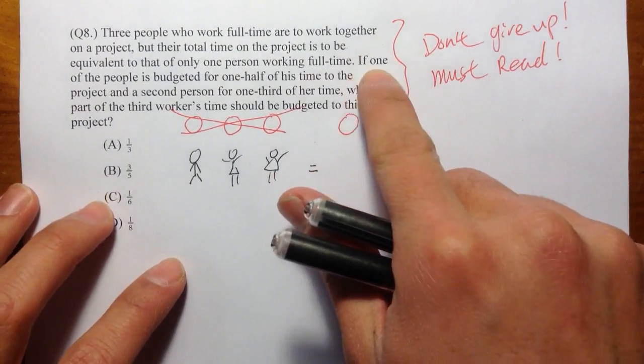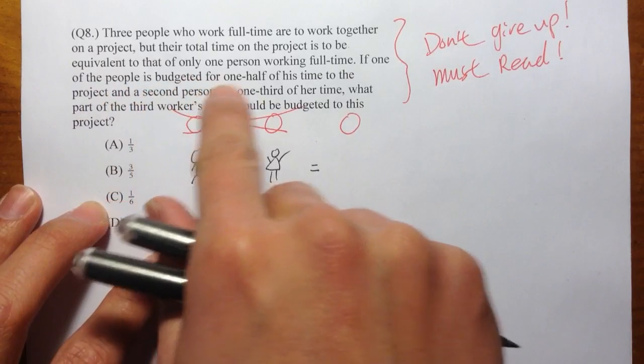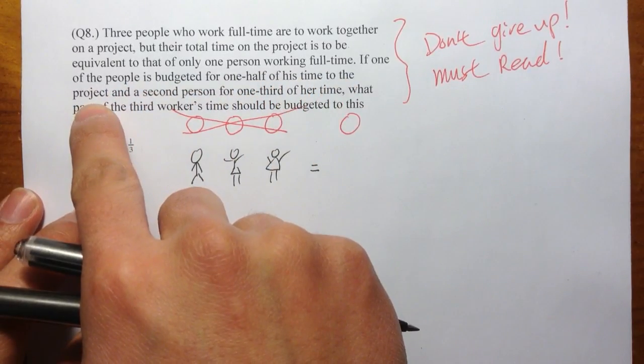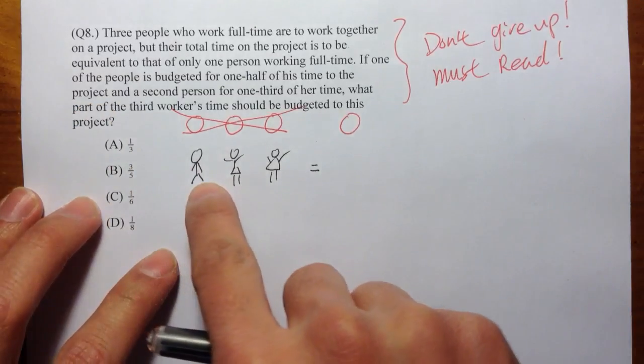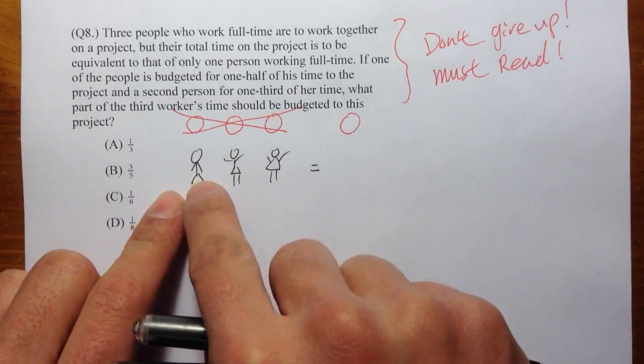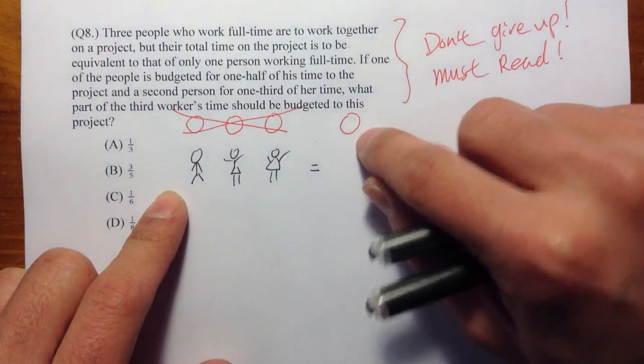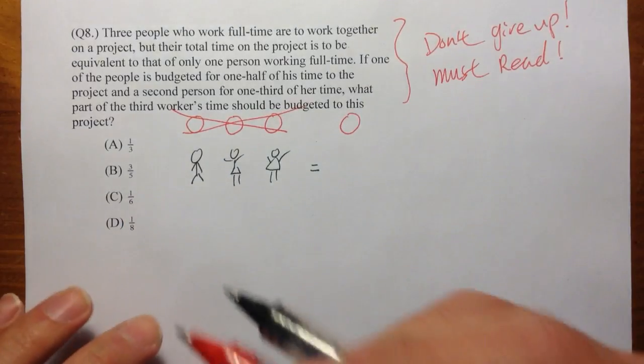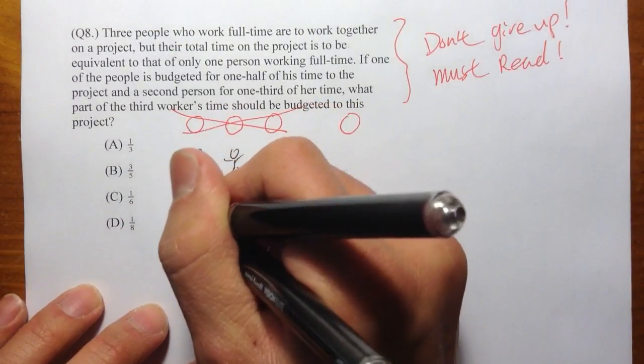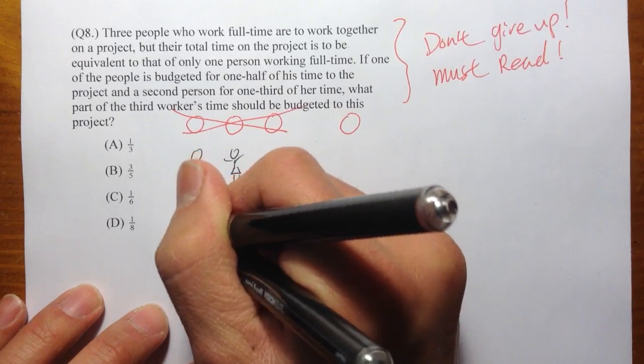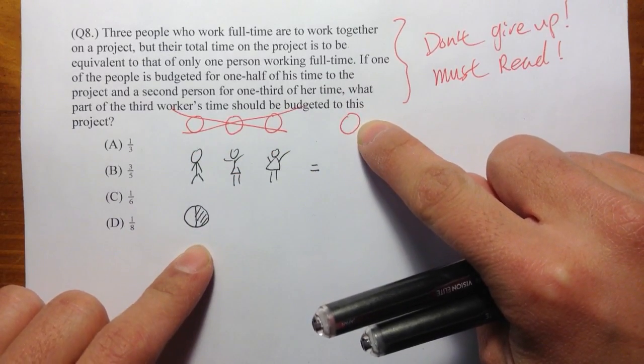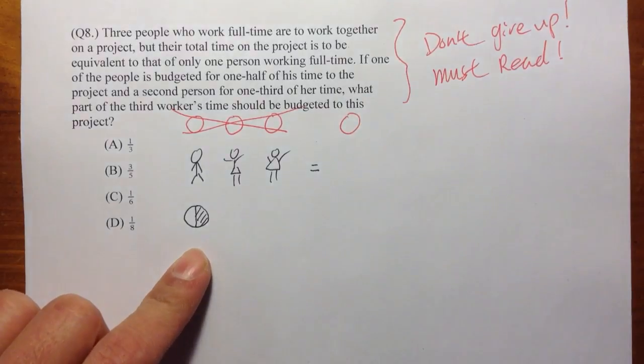And then it says, if one of the people is budgeted for one-half of his time to the project, you can think about that as this. You can think about this person is going to eat one-half of this pizza. So let me draw that down first. This person is going to eat half of this pizza.